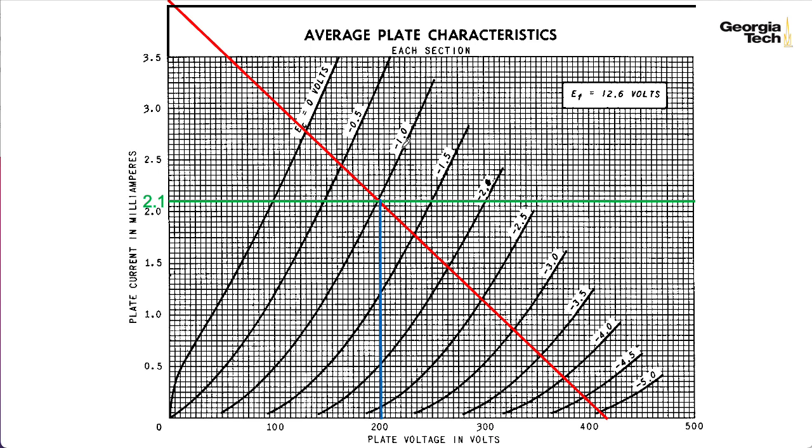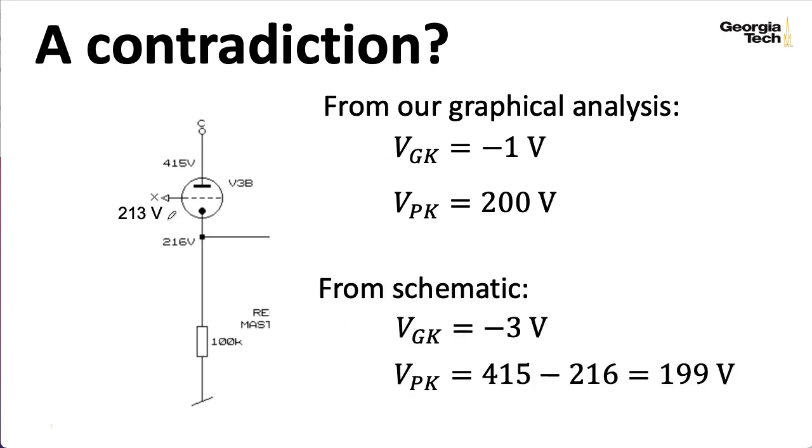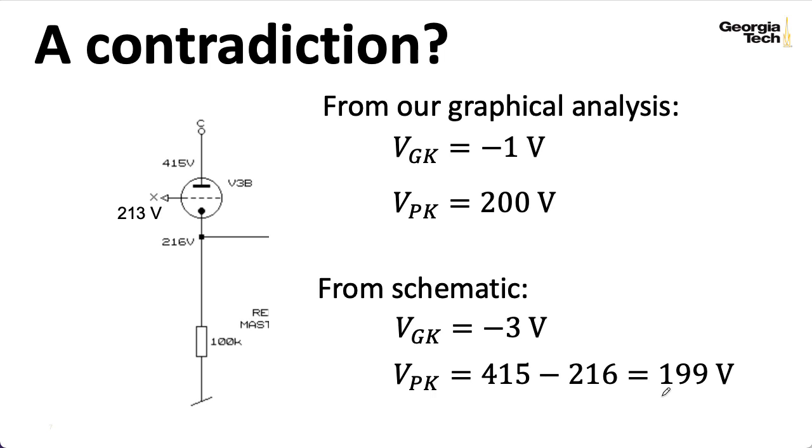But, here's the problem. That's what I get from a graphical analysis. But, if I look at the schematic, I see that there's a 3-volt grid-to-cathode difference. So, I'm quite a bit off there. Luckily, I'm consistent as far as the plate-to-cathode voltage goes. But, all of my analysis from this point forward should be treated with suspicion.